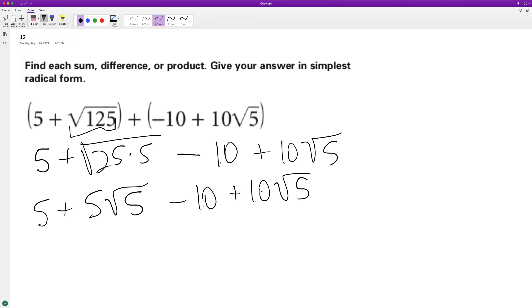Okay, so combining like terms, we get negative 5, 5 minus 10, and then plus 15 root 5. That's it.